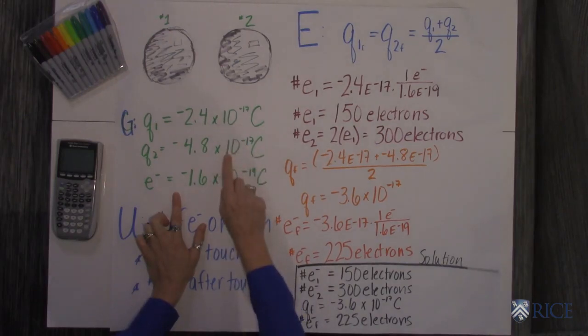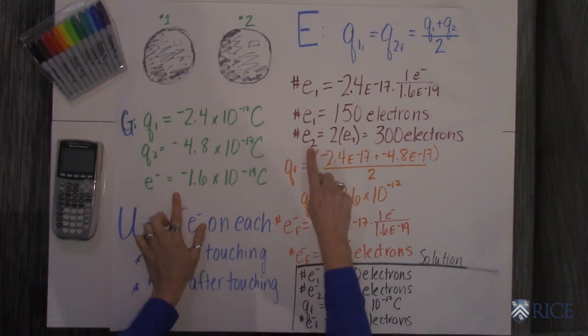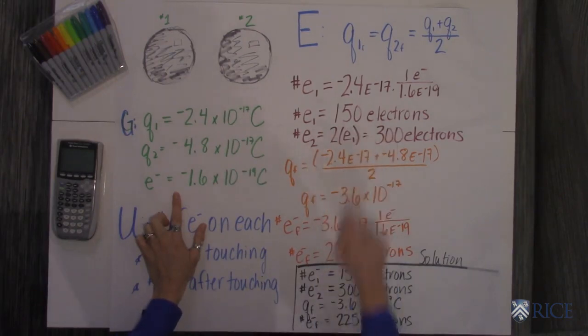You can notice that the second sphere's charge is twice the first, so the number of electrons on sphere number two is just twice that, which is 300.